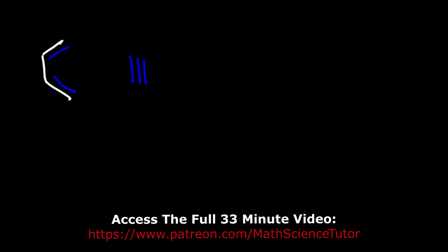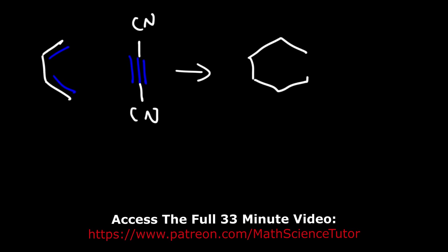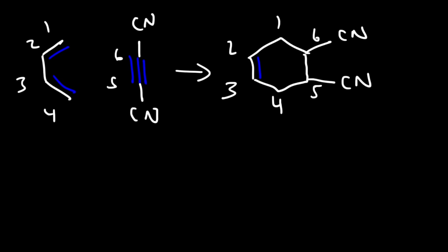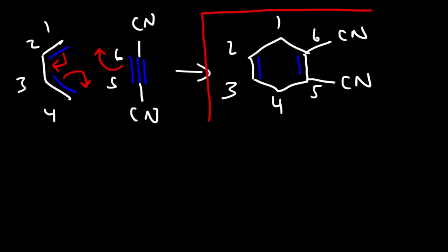In the next example we're going to react 1,3-butadiene with a dienophile that has a triple bond as opposed to a double bond. We still get a six-membered ring with a double bond between carbons two and three. Attached to carbon six we have a CN group, and also on carbon five. In this reaction the triple bond goes down to a double bond, giving a double bond between carbons five and six. This is the major product.